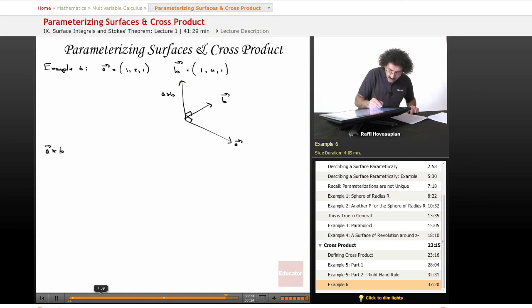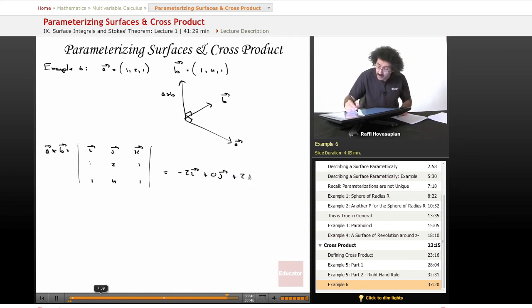So A cross B equals I, J, K. And we have one, two, one, one, four, one, K. When we actually do this, expand it along the first row, we end up with the following. We end up with minus 2I plus 0J. And I hope that you'll confirm this for me because it's very possible that I made an arithmetic error.